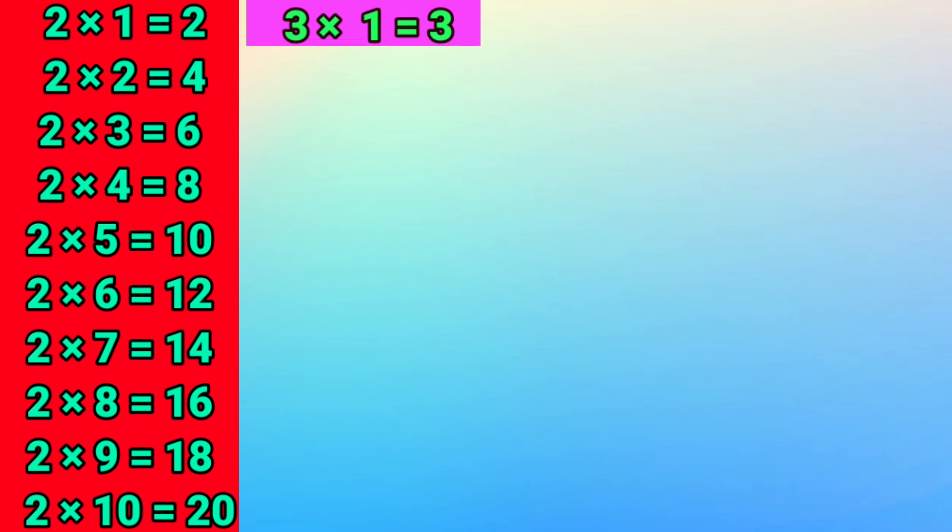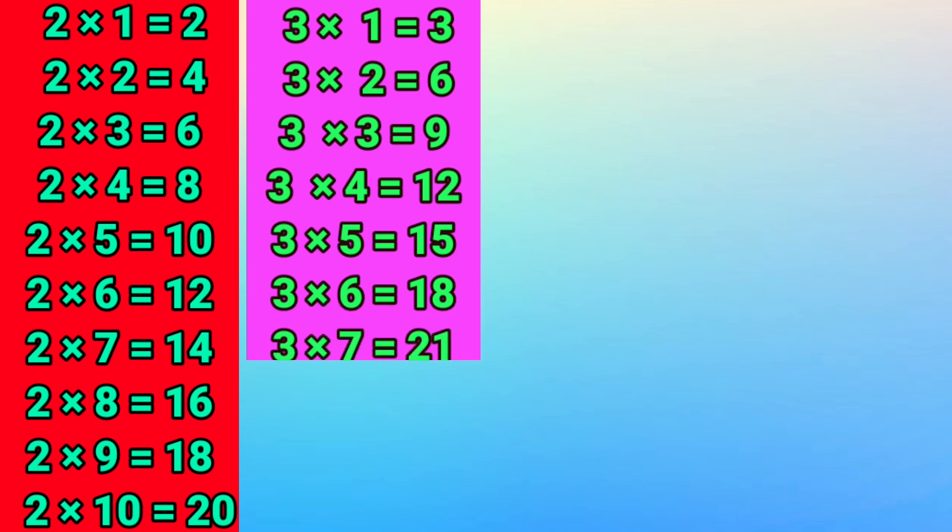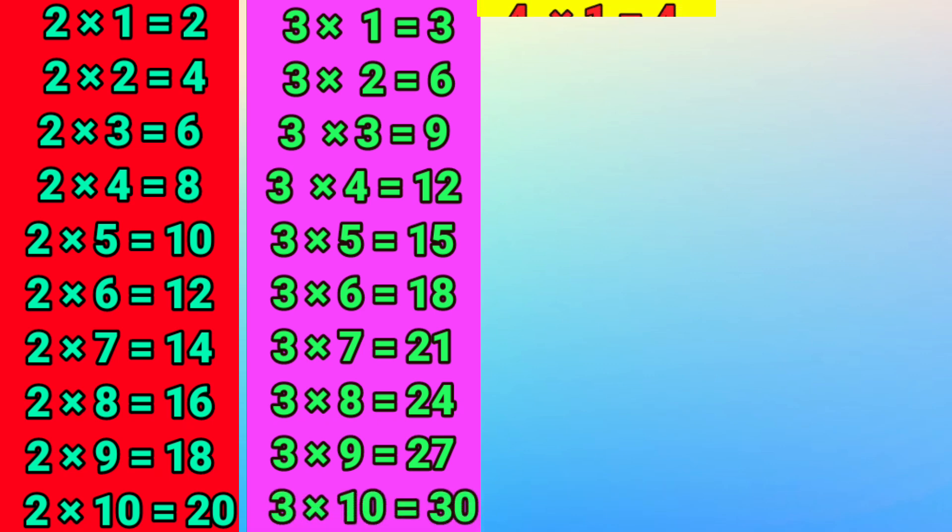3 times 1 is 3, 3 times 2 is 6, 3 times 3 is 9, 3 times 4 is 12, 3 times 5 is 15, 3 times 6 is 18, 3 times 7 is 21, 3 times 8 is 24, 3 times 9 is 27, 3 times 10 is 30.